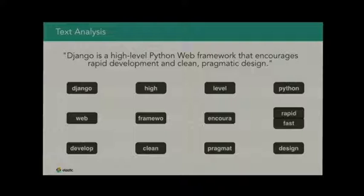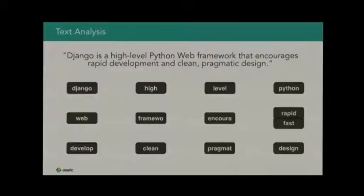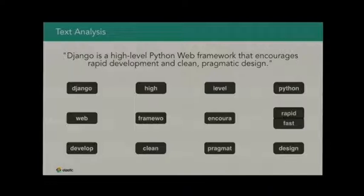First of all, everything is lowercase. That makes sense — if I search for a word in lowercase or uppercase, I should still find the document. Also, I skipped some words. I don't care to find the word 'is' or 'a'. Assuming we are working with English, those words will be in pretty much every single document we have. That's not interesting — they won't help us and will just take up space in the index. Those are called stop words and we just ignore them.